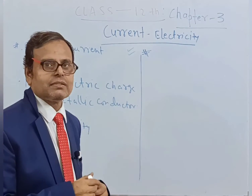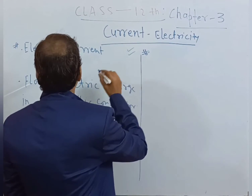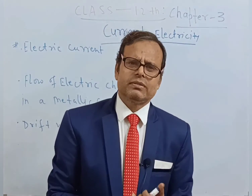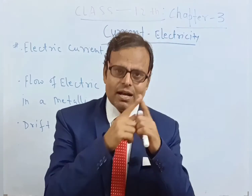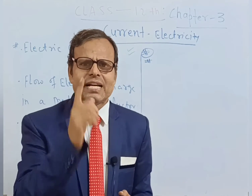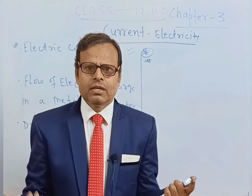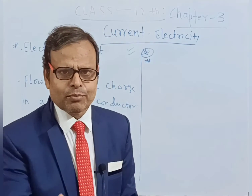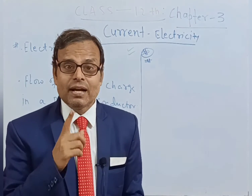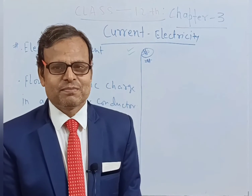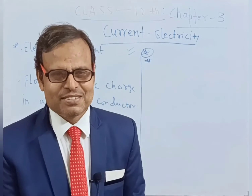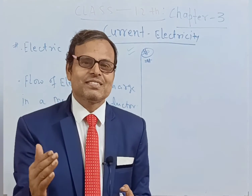So, electric current — we have to define it. What is electric current? We all know about the flow of charge. Charge is either positive or negative. When charge moves with respect to time, the rate of motion of charge is known as electric current. On a conductor, the charges are electrons, so the rate of flow of electrons is also known as electric current.